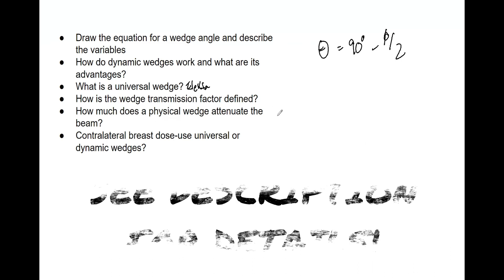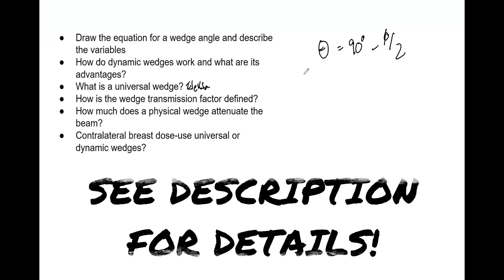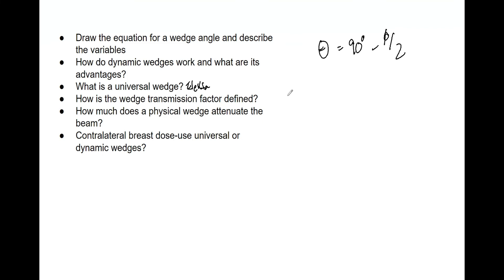The wedge transmission factor is defined as the ratio of doses with and without the wedge at a point in a phantom along the central axis. You want to measure past D-max, and it is a function of the beam energy, the field size, and the depth of measurement.